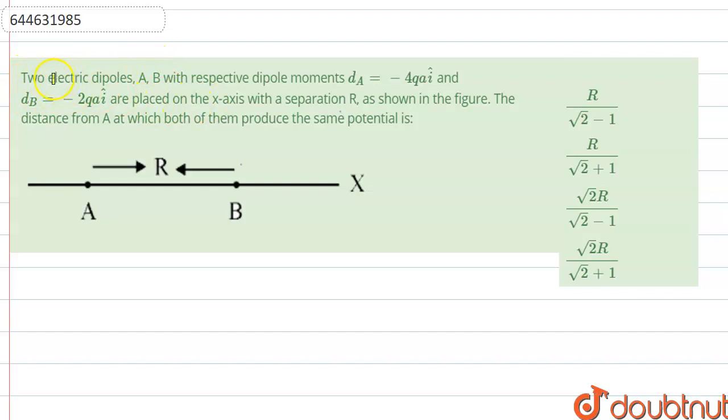are given that there are two electric dipoles A and B with respective dipole moments d_A equals 4qa i-cap and d_B equals minus 2qa i-cap, placed on the x-axis with a separation R as shown in the figure.